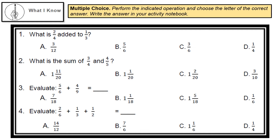Number 4: 2/6 plus 1/3 plus 1 2/5 equals... A. 14/12, B. 7/6, C. 1 1/6, or D. 1/4.